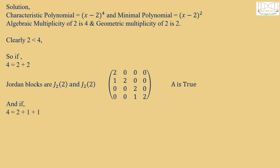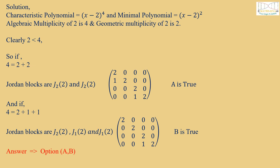And if 4 = 2 + 1 + 1, then Jordan blocks are J₂(2), J₁(2), and J₁(2), represented as the given matrix. Hence B is also true. Therefore the correct answers are A and B.